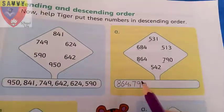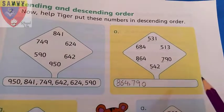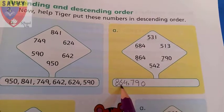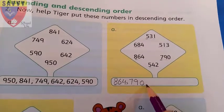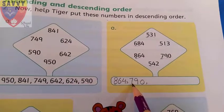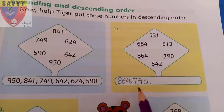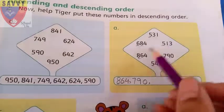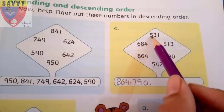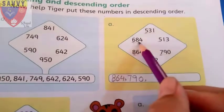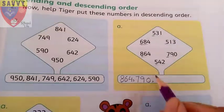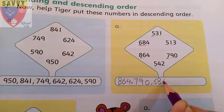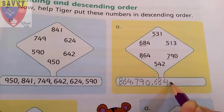We are putting these numbers in descending order — from greatest to smallest. 864 is greater than 790. What comes before 7? Six. So where is our 600s value? Here we have 684, so we write 684 next.